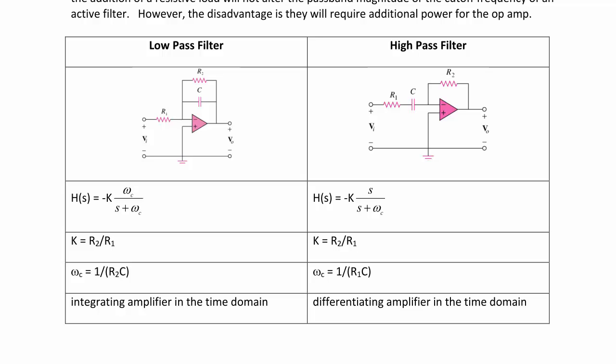The right circuit is a high-pass filter with the transfer function negative k·s over (s + ωc). The gain k is R2 over R1, and the cutoff frequency is 1 over R1·C. Note that in the time domain, this circuit acts as a differentiating amplifier.